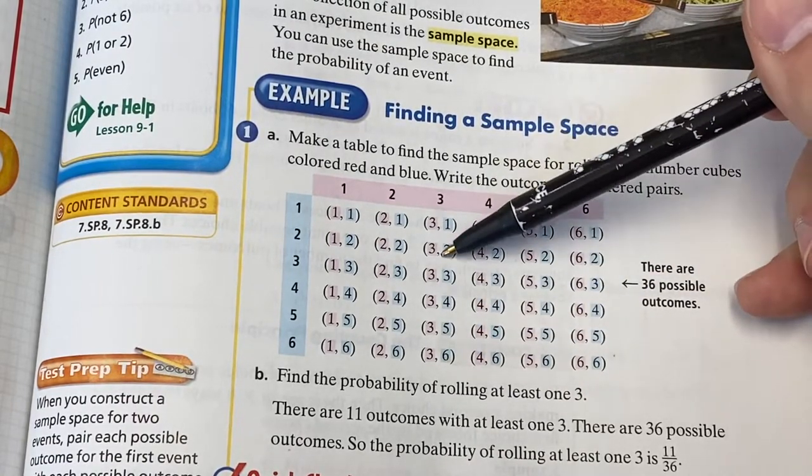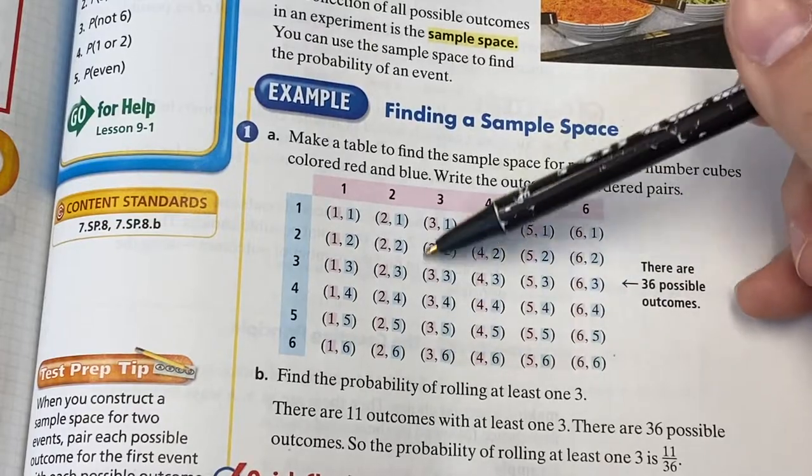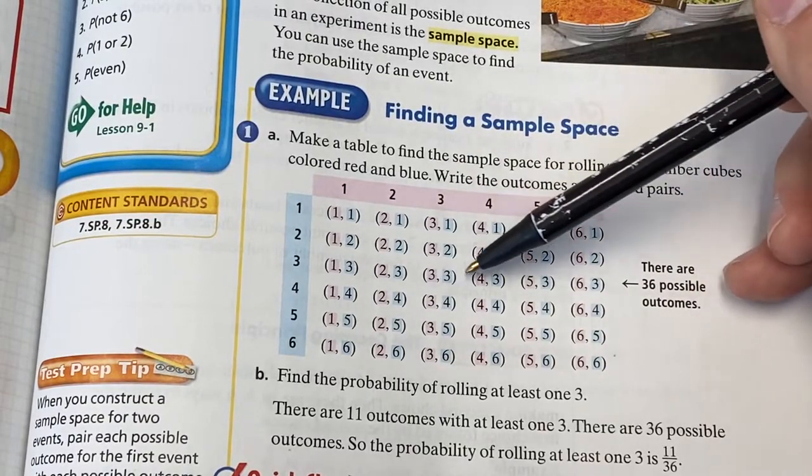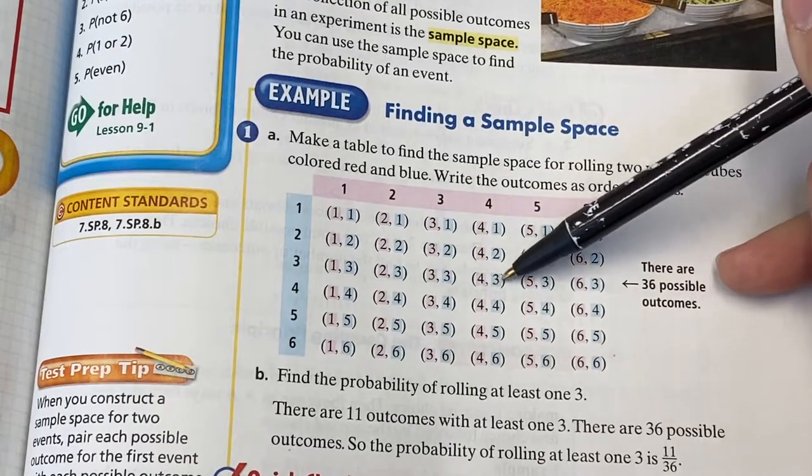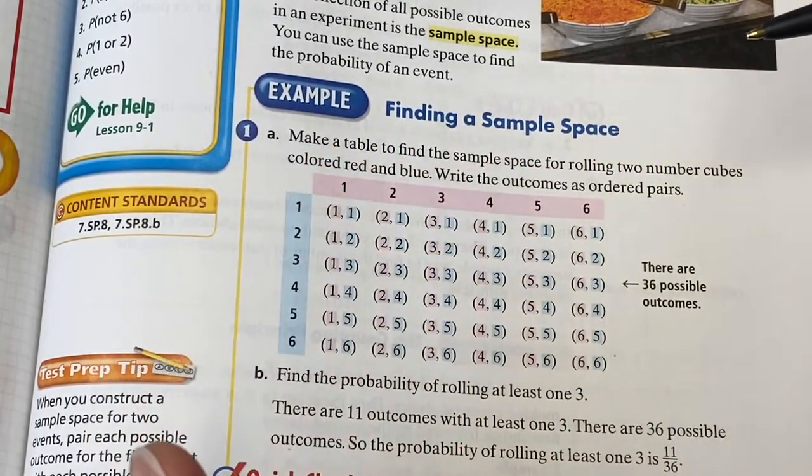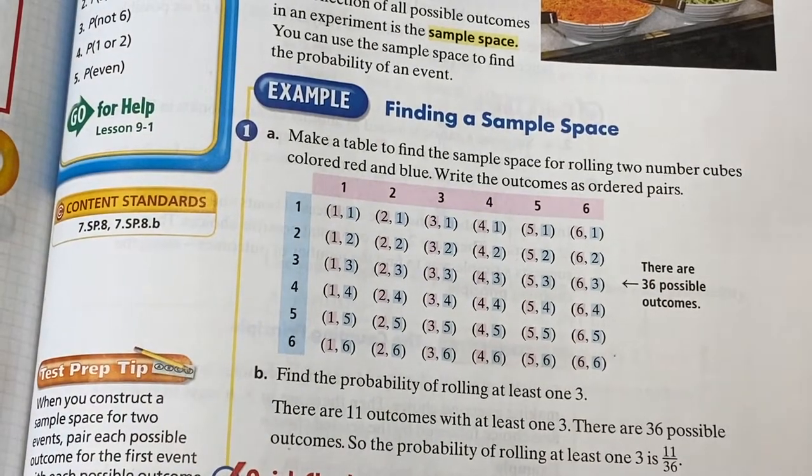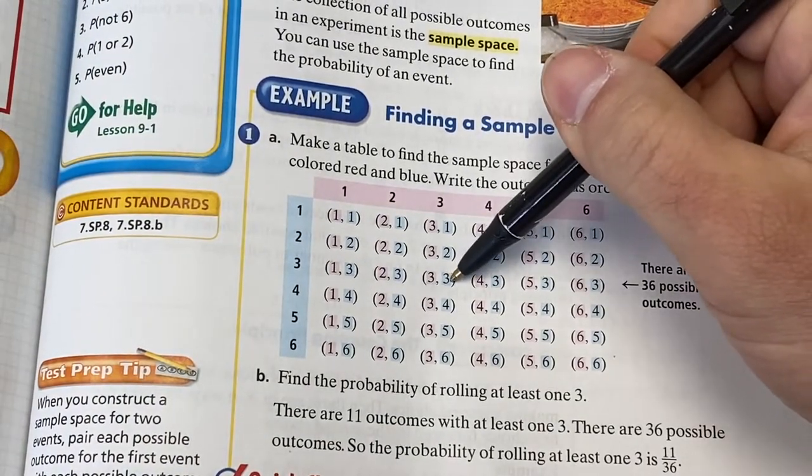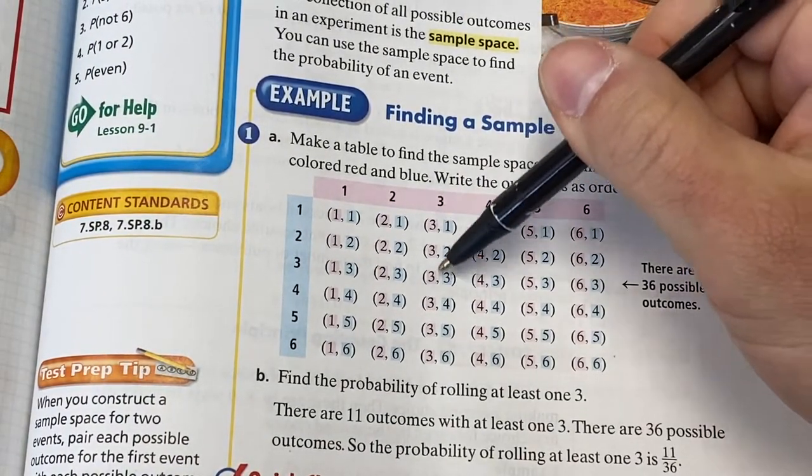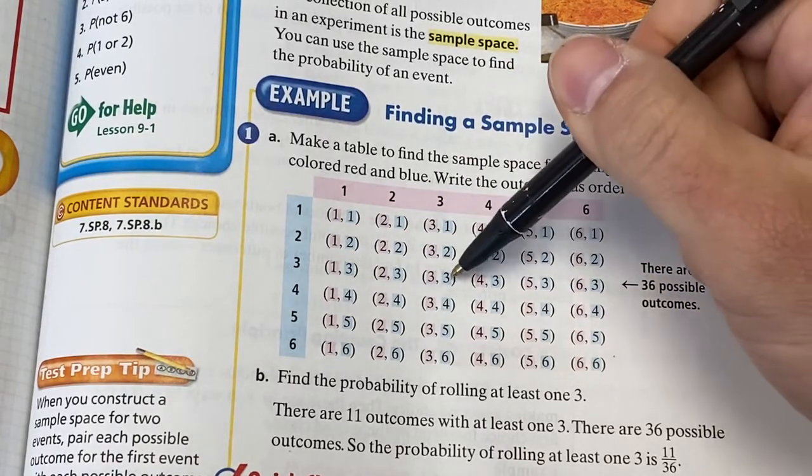this whole column does. One, two, three, four, five, six has at least one three. And this whole row has at least one three. One, two, three, four, five, six. But, and this is a very, very big but, big but, don't double count this one. This three, three is in the row and the column. Don't double count it. It's not there twice.